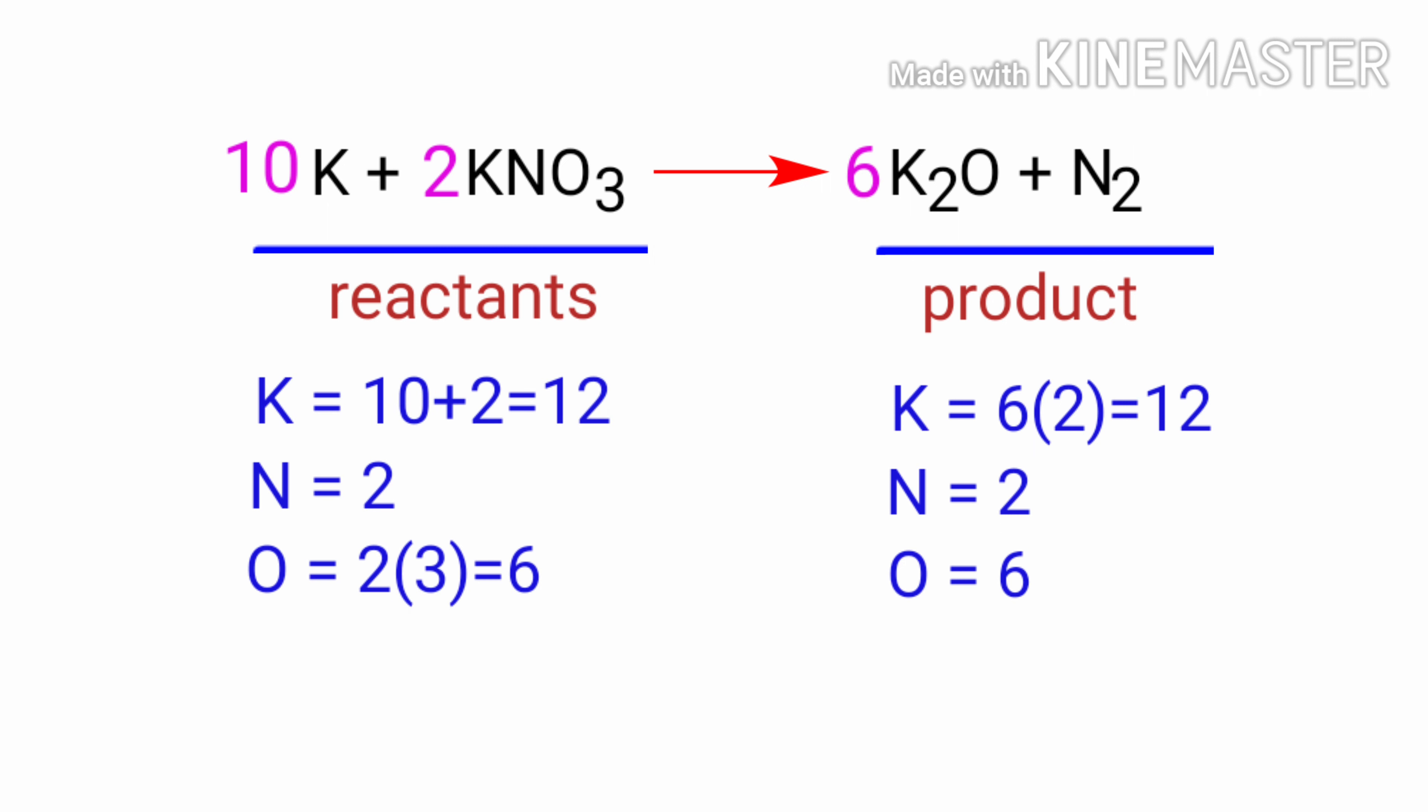The equation is now balanced. There are 12 potassium atoms, 2 nitrogen atoms and 6 oxygen atoms on both sides.